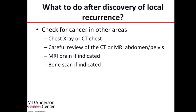If indicated, we need an MRI of the brain — typically if the patient has a new headache, a recent seizure without prior history, or visual changes. We can also get a bone scan if indicated — for example, if alkaline phosphatase is elevated on blood tests, or if the patient has new bone pain that wasn't present before.